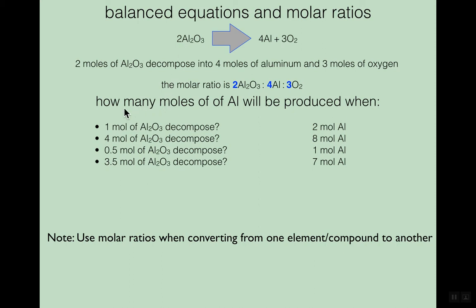You can use this to find how many moles of aluminum are produced. For example, if we cut the amount of aluminum oxide in half — like halving a recipe — one mole is half of two. So we cut everything in half: four aluminums drops to two, and three oxygens drops to 1.5. One mole of aluminum oxide gives two moles of aluminum.